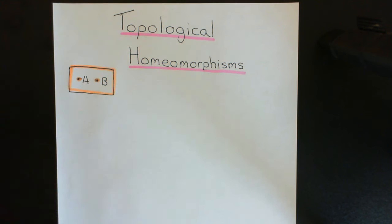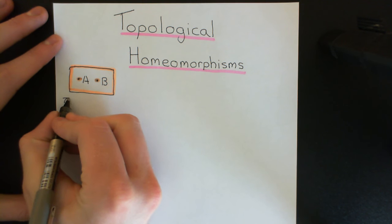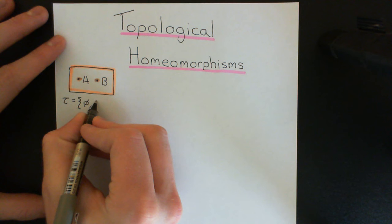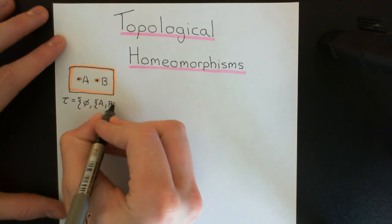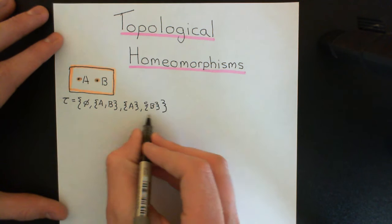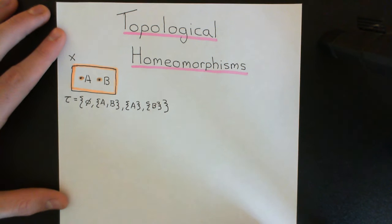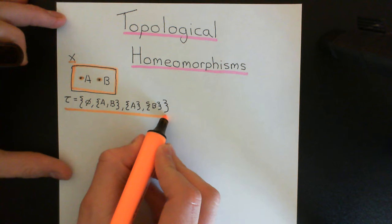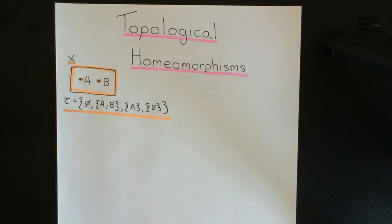I want to put a topology on this set to turn it into a topological space, and I'm going to choose the discrete topology, where every single subset of the set is in the topology. Writing this out explicitly, let tau be the set containing the empty set, the entire set {A, B}, and then the two singletons: the set containing just A and the set containing just B. This is indeed the power set of X — there are no other subsets you can possibly come up with.